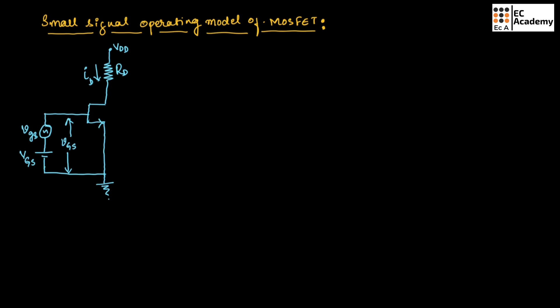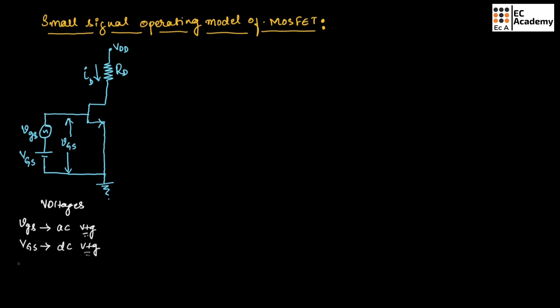The main aim of the small signal model is to find AC current and AC voltage. Let us consider a circuit which consists of both an AC source as well as a DC source. From the circuit, we can write three types of voltages: vGS which is AC voltage, VGS in capital letters which is DC voltage, and small v capital GS which is total voltage.